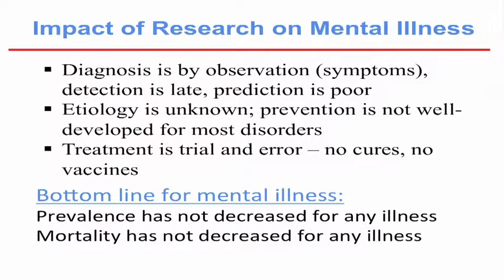Why is this the case? In mental illness, just like anemia or chest pain, it's a symptom-based diagnosis. We do not have a blood test. We do not have a brain scan marker. We do not have a genetic test. We don't have any biological determinants that actually help diagnose very clearly. It's all symptom-based — how do you feel — and the detection is late and the prediction is poor. Many people were not seeking help, and those that were seeking help were not getting the right kind of treatment.